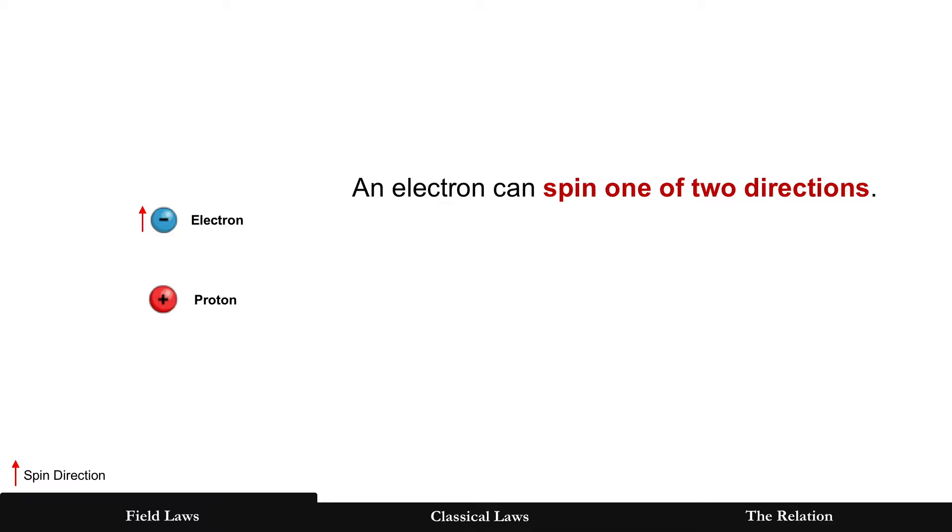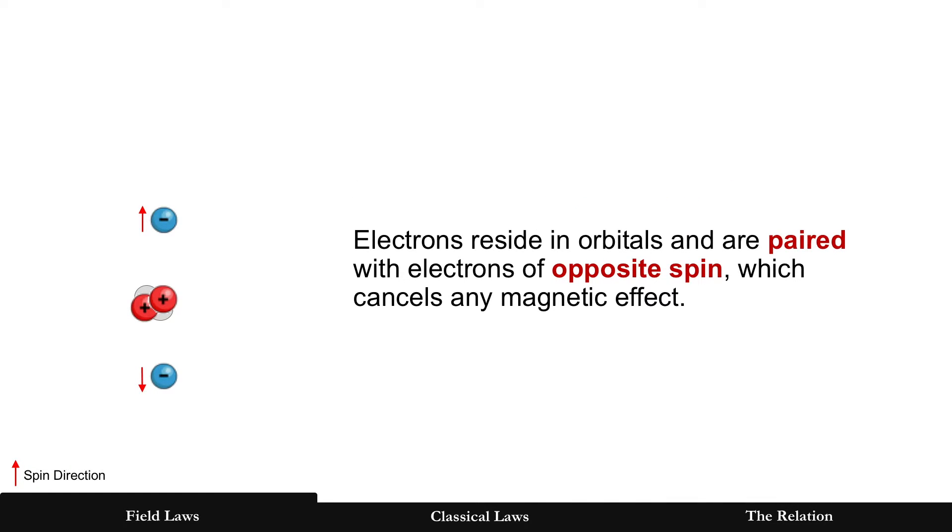Now an electron can spin one of two directions, and the easiest thing to do is just show arrows either up or down. They reside in orbitals of an atom, are typically paired with opposite spin electrons which will cancel the magnetic effect.